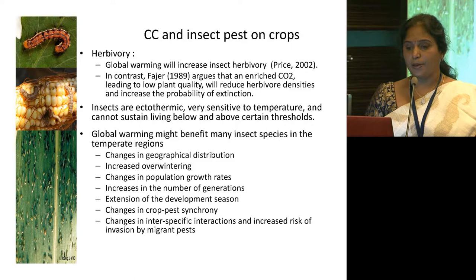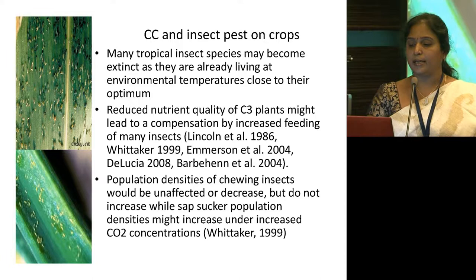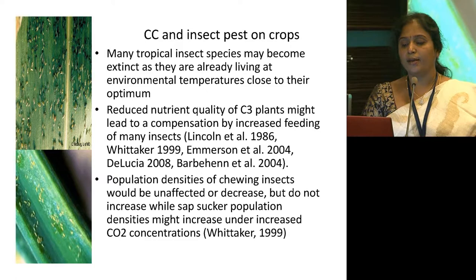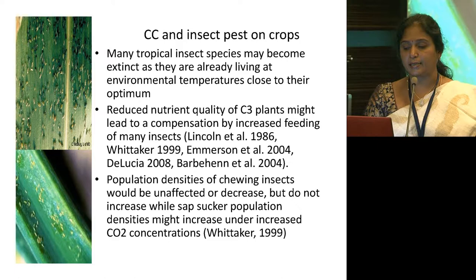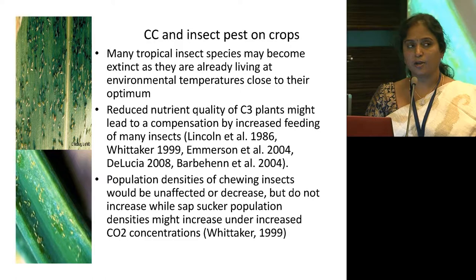In the case of tropical insects, species may become extinct as they are already living at environmental temperatures close to their optimum — any increase in temperature will lead to extinction of those pests. The reduced nutrient quality of C3 plants might lead to compensation by increased feeding by many insects. Population densities of chewing insects would be unaffected or decreased, but sap-sucker population densities might increase under increased CO2 concentration.